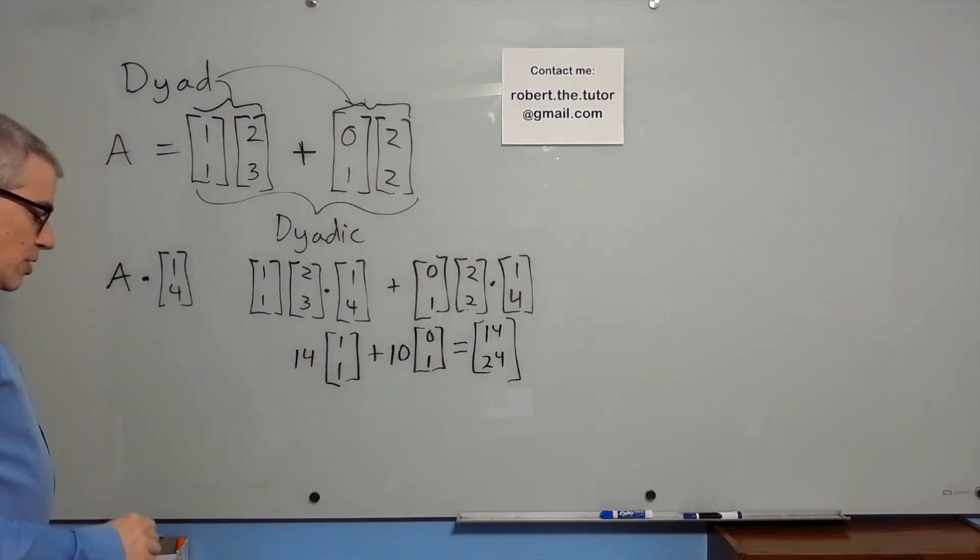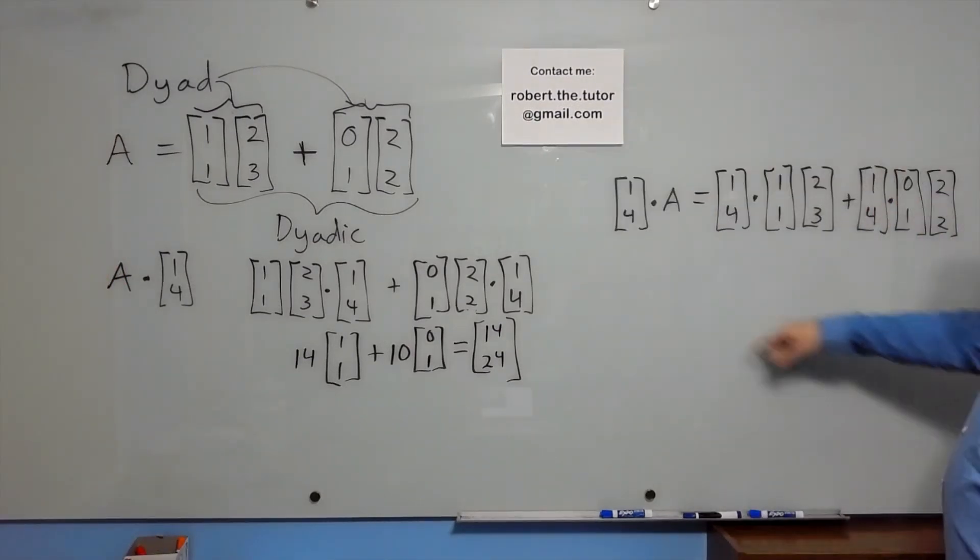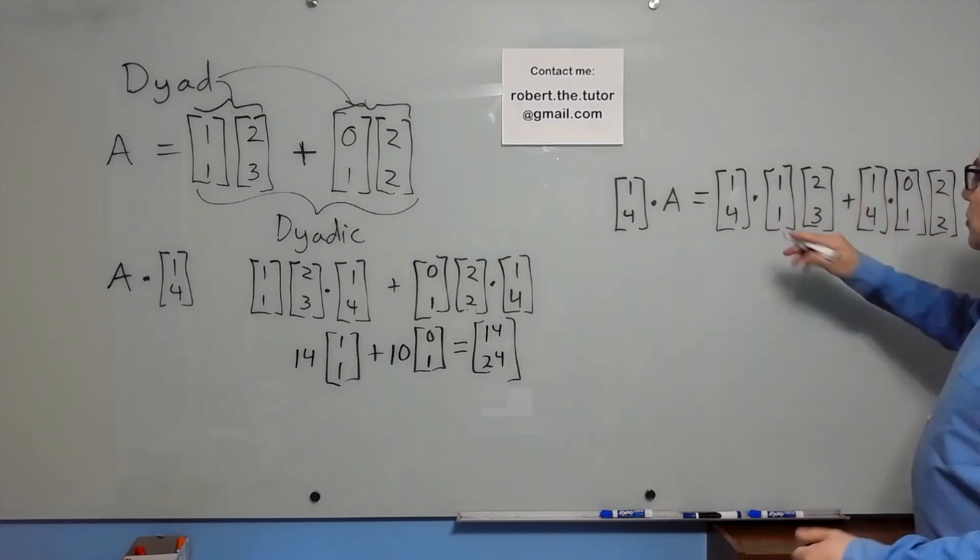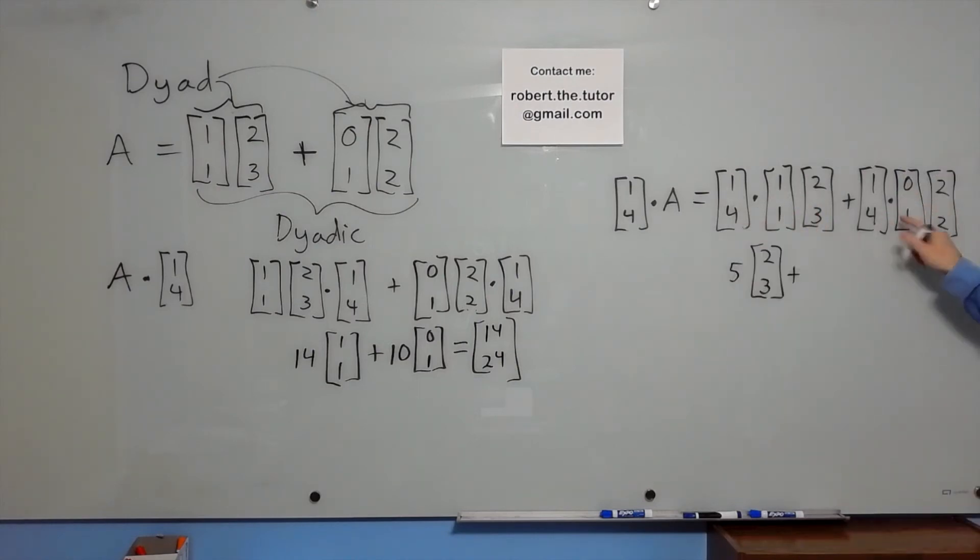You can also dot on the left instead of the right, and that's a different thing, because you're going to dot with the first vector of each dyad in the dyadic instead of the second one. So these combine into one result, and those combine into another.